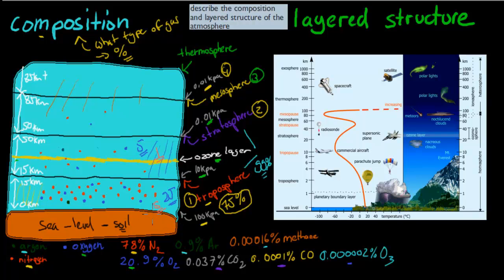The troposphere has the vast majority of molecules, then comes the stratosphere, the mesosphere, and the thermosphere. The most important part to know is that overall, the percentage composition in each layer is roughly the same — roughly 78% nitrogen, 20.9% oxygen, then a bit of argon, and the rest in very small percentages.